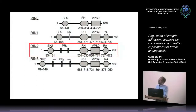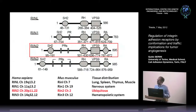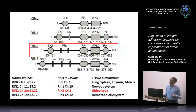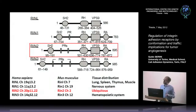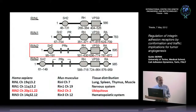RIN2 belongs to a wider family: RIN1 is expressed mainly in the nervous system, RIN3 in the hematopoietic system, RINL in lung, spleen, thymus, and muscle, while RIN2 is rather ubiquitous. From N- to C-terminus, RIN2 contains an SH2 domain, proline-rich domains, a REN homology domain shared by the whole family, a VPS9 domain—a bona fide RAB5 guanosine exchange factor domain—and a RAS-binding domain.